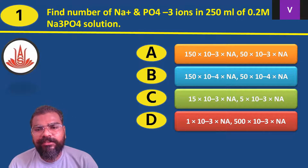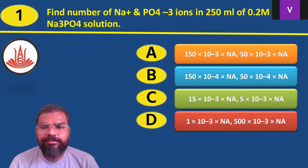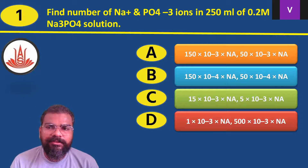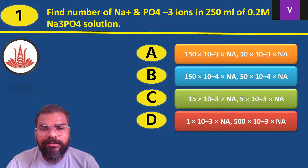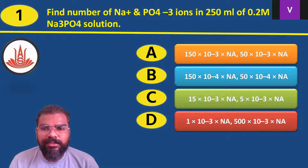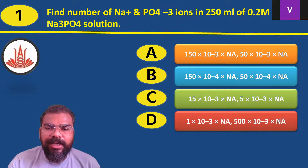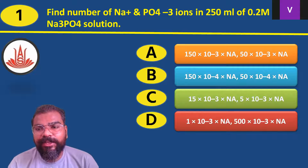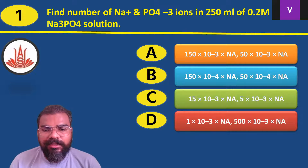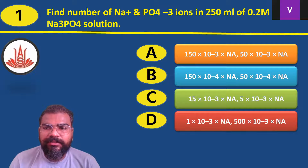Option A: 150×10⁻³×Nₐ for Na⁺ and 15×10⁻³×Nₐ for PO₄³⁻. Option B: 150×10⁻⁴×Nₐ and 15×10⁻⁴×Nₐ. Option C: 15×10⁻³×Nₐ and 5×10⁻³×Nₐ. Option D: 1×10⁻³×Nₐ and 500×10⁻³×Nₐ.